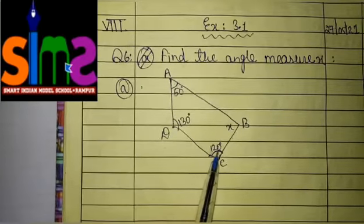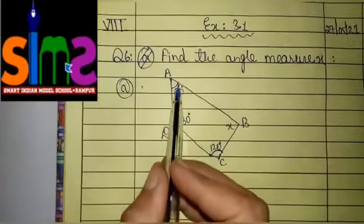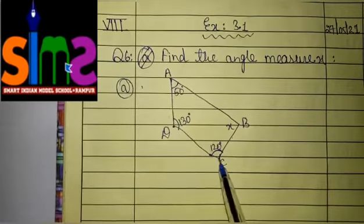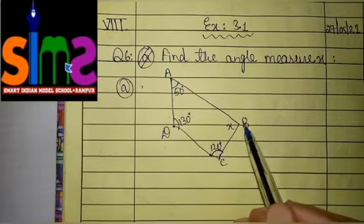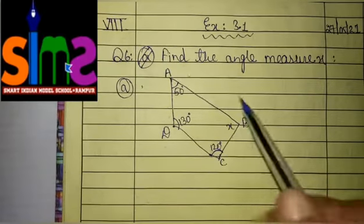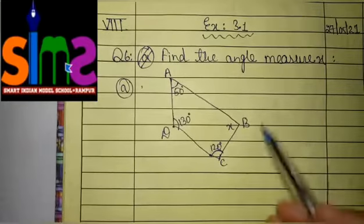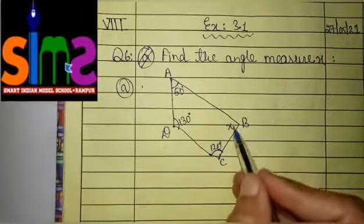And this picture also have 4 angles. Angle A is given 50 degree, angle D is given 130 degree, angle C is given 120 degree and angle B is given X degree. So we have to find out the angle measure of this X. It means we have to find out the angle B.